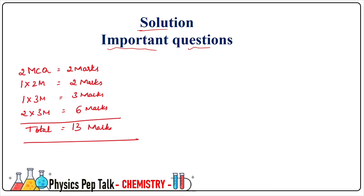We will cover MCQ questions, 2-marks questions, and 3-marks questions. In the 3-marks section, there is 1 theory question and 2 questions, plus 2 numerical problems — that is 3 marks each. So the total comes to 6 marks from the 3-marks section.